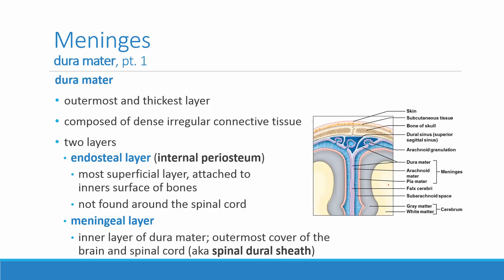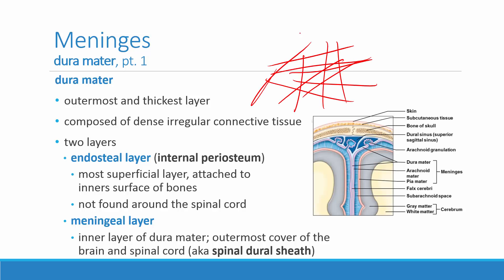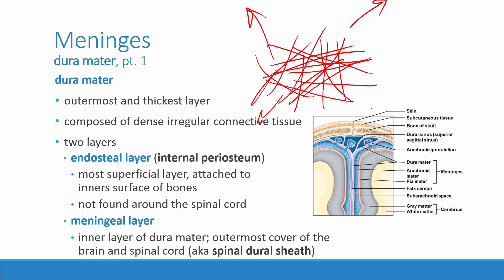The dura mater is the outermost and thickest of the three layers, composed of dense irregular connective tissue — dense meaning built primarily of collagenous protein fibers, and irregular because the fibers are laid down in every direction, so you can tug at it from any direction and it is strong regardless. There are two layers to it: the endosteal layer is the most superficial and adheres to the inner surface of the bones.